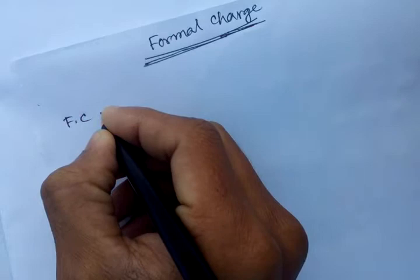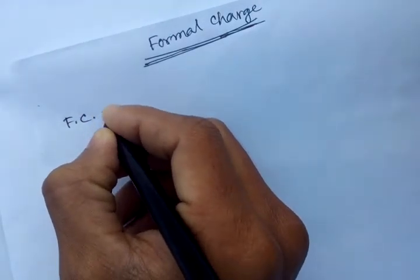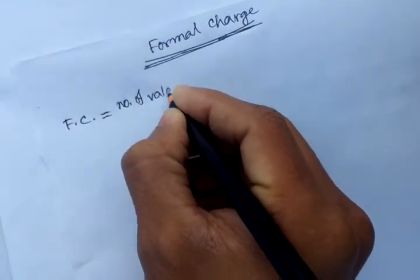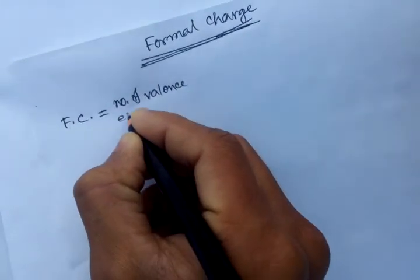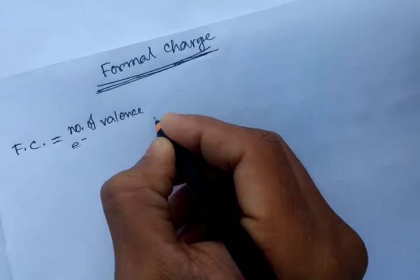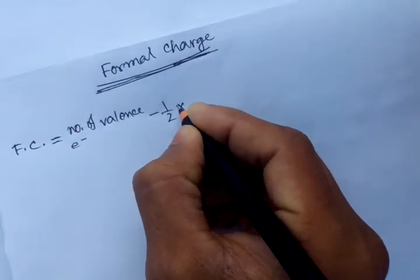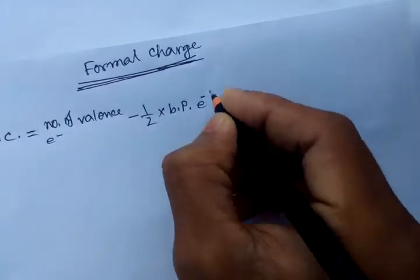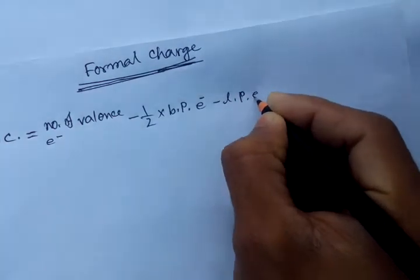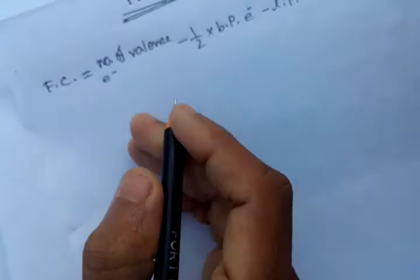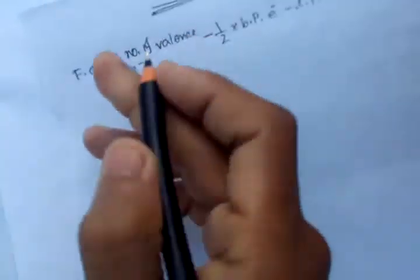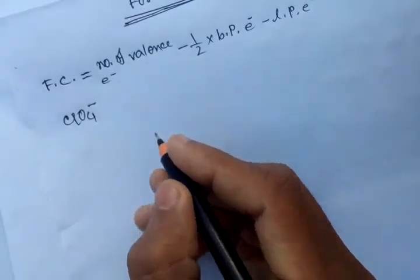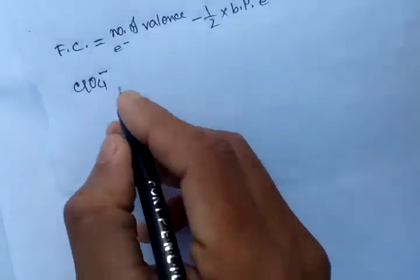We can calculate formal charge by this formula: number of valence electrons of a particular atom, minus half times the bonded (shared) electrons, minus the lone pair electrons. Let us consider the molecule ClO4 minus (perchlorate). The structure will be as follows.